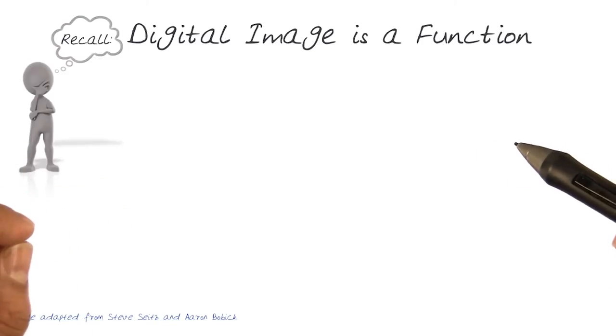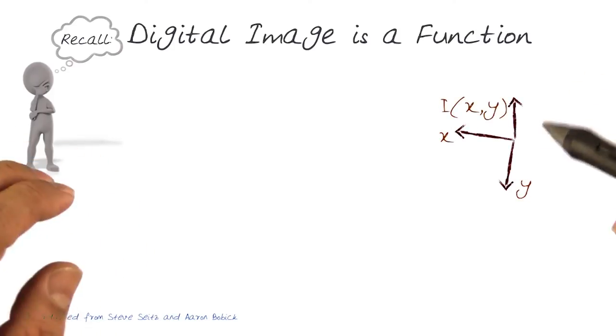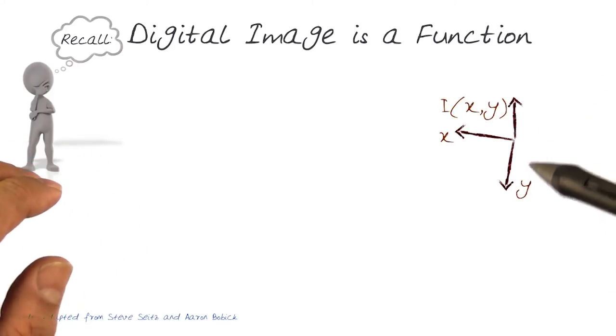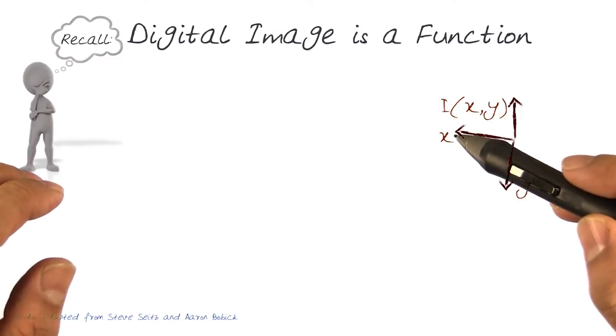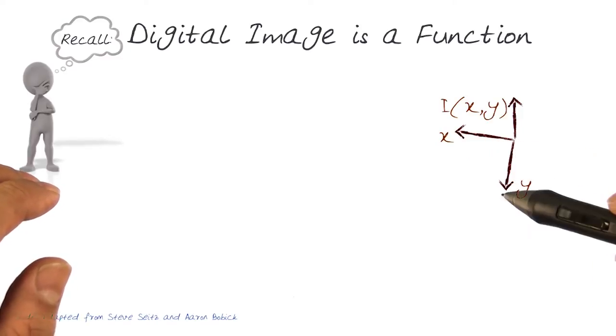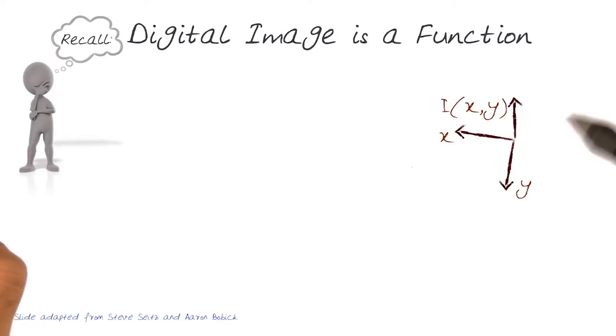Remember that we started talking about digital images as functions, which we covered in previous lectures. We can represent an image as a function with x and y axes and intensity in the third dimension.